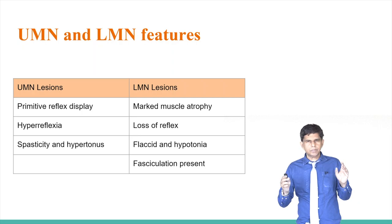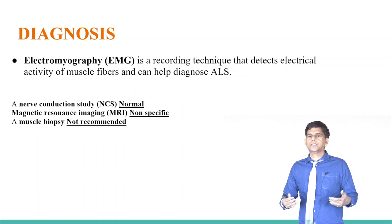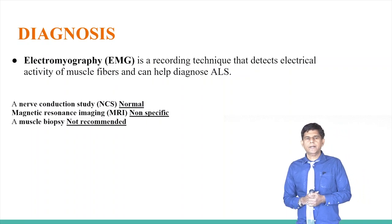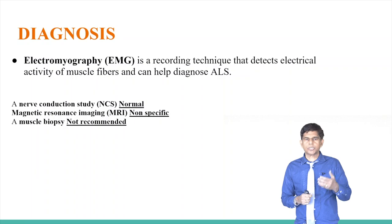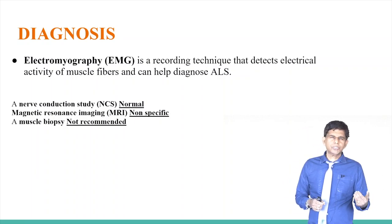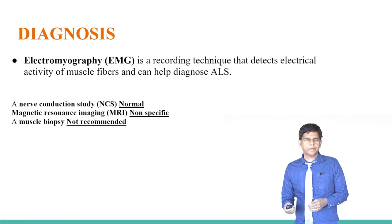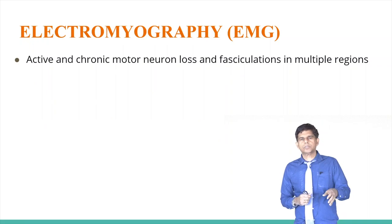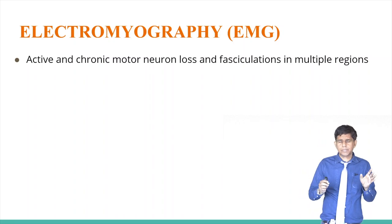Diagnosis is primarily clinical — you must rule out other causes first. The key diagnostic test is EMG, or electromyography, combined with nerve conduction studies. EMG detects electrical activity of muscle fibers. Nerve conduction studies are usually normal. MRI is non-specific, and muscle biopsy is not typically recommended. The most classic EMG finding is active and chronic motor neuron loss with fasciculations in multiple regions — if you remember one thing, remember fasciculations in multiple regions.